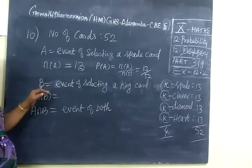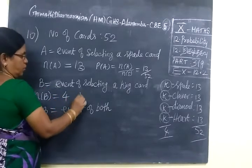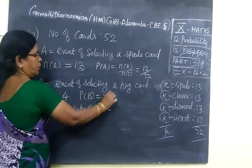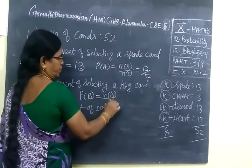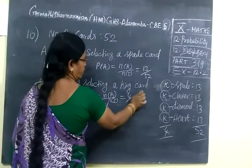Next event: selecting a King card. King card under 4. So N of B, P of B equal to N of B, Number of Elementary sum, equal to 4 by 52.